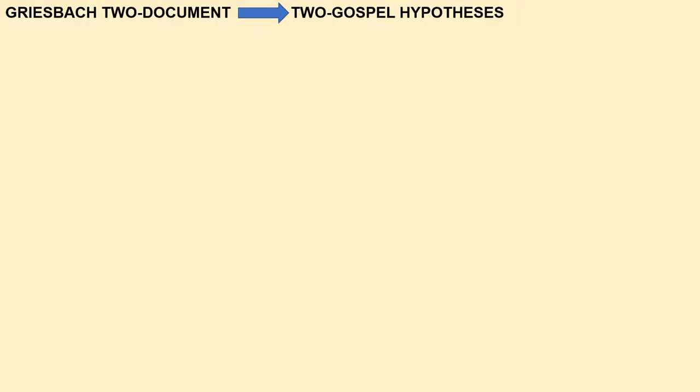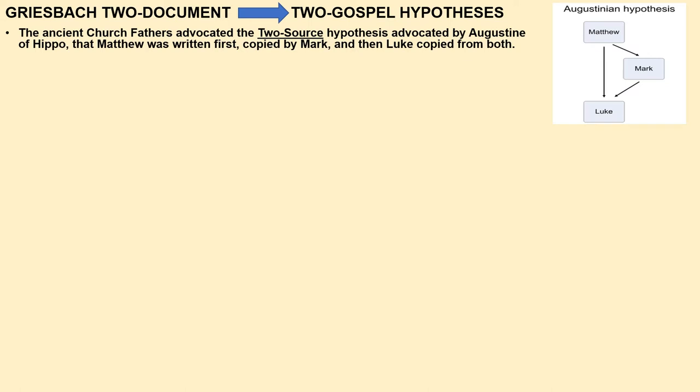The Griesbach two-document theory became the two-gospel hypothesis. The ancient church fathers, including Augustine of Hippo, advocated that Matthew was written first and copied by Mark, and then Luke copied from both. That was the theory Augustine put forth, and many early church fathers believed Matthew was prior to the other gospels.